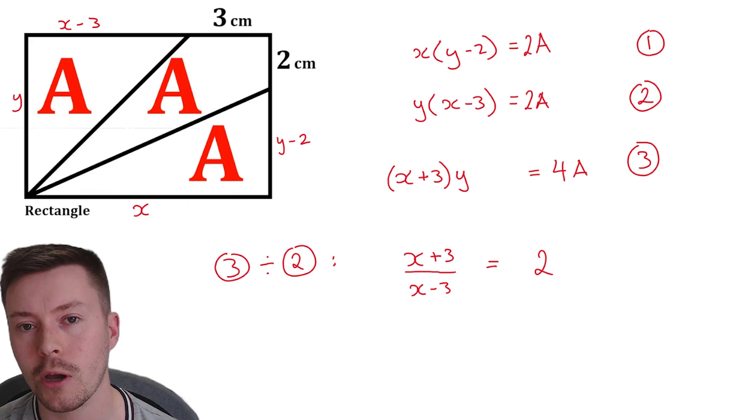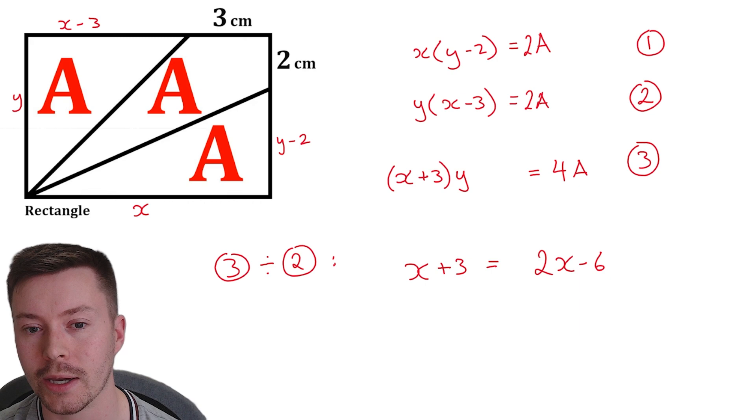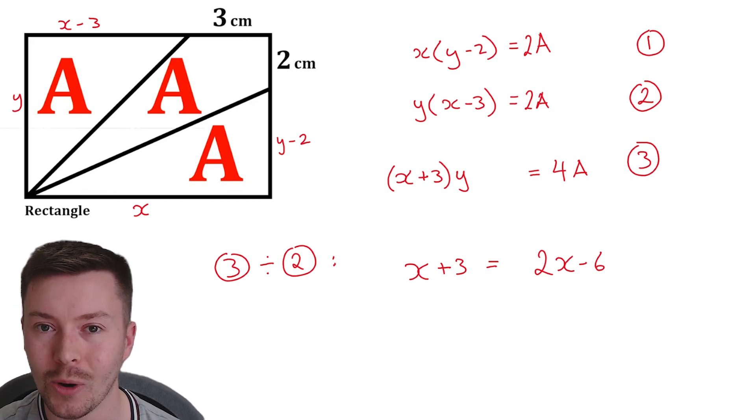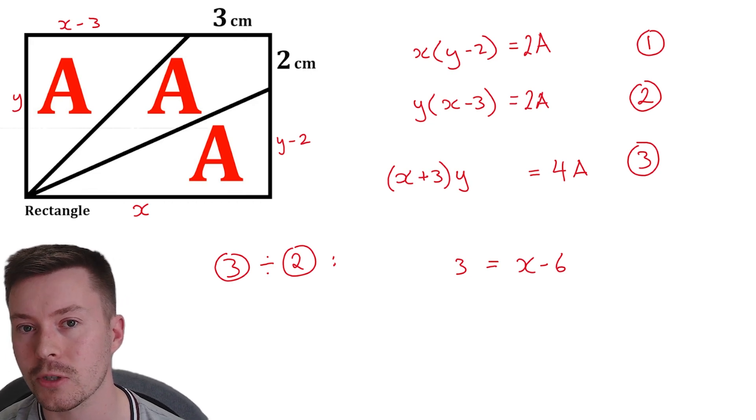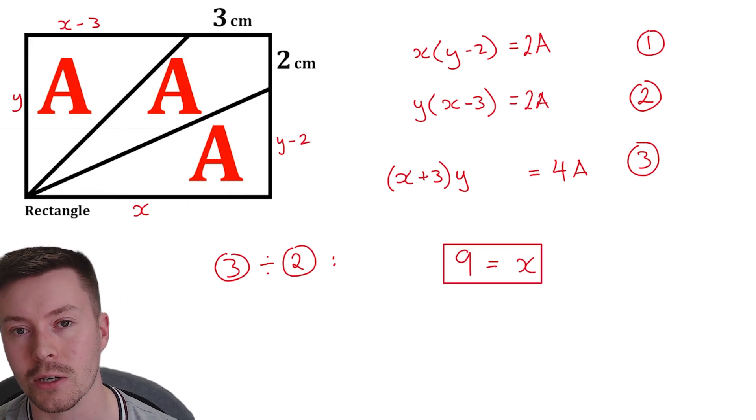Now if I multiply both sides here by X minus three, I get X plus three is equal to 2X minus six. Take away an X from both sides and I get three is equal to X minus six. Add the six to both sides and we get X equal to nine.